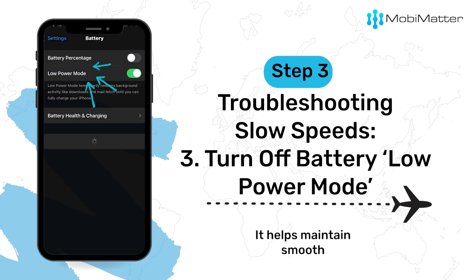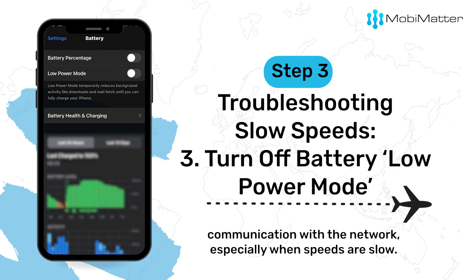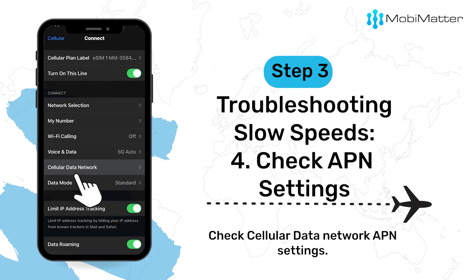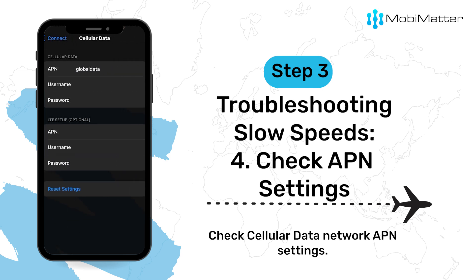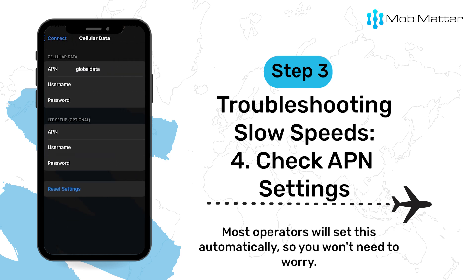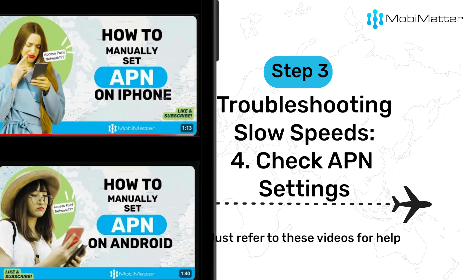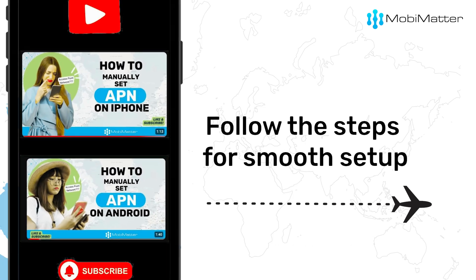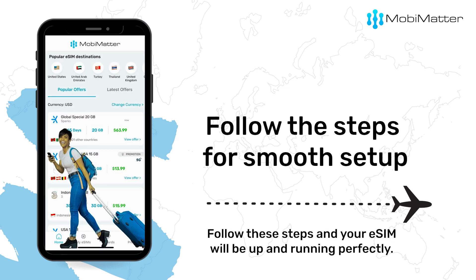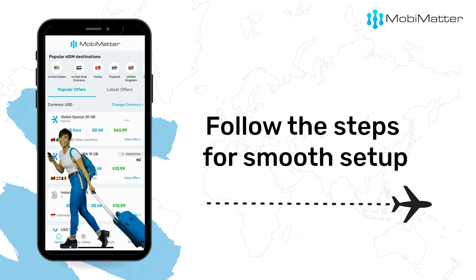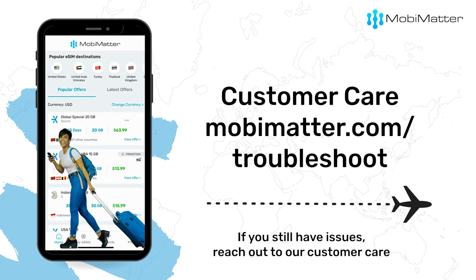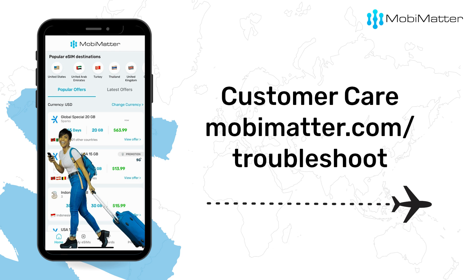Turning off Battery Saving Mode helps maintain smooth communication with the network, especially when speeds are slow. Also check your Cellular Data Network APN settings — most operators will set this automatically, so you won't need to worry. But if it's not set, refer to these videos for help. Follow these steps and your eSIM will be up and running perfectly. If you still have issues, reach out to our customer care at mobimatter.com/troubleshoot.